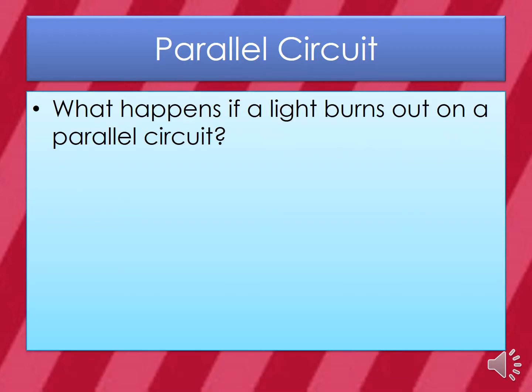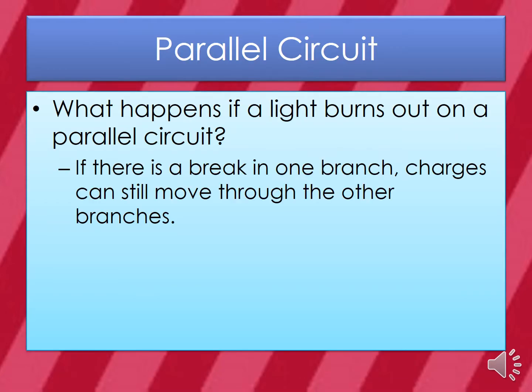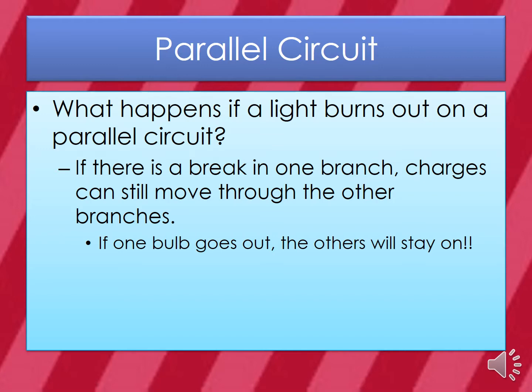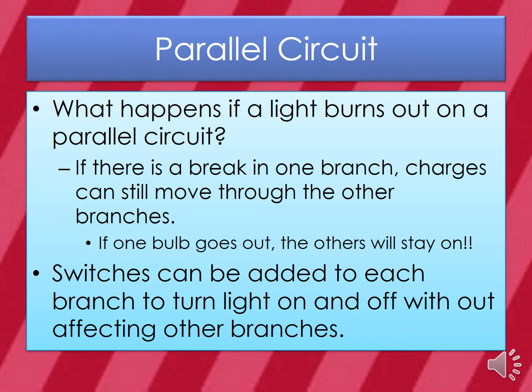What happens if a light burns out on a parallel circuit? If there is a break in one branch, charges can still move through the other branches. If one bulb goes out, the others will stay on. Switches can be added to each branch to turn a light on and off without affecting the other branches.